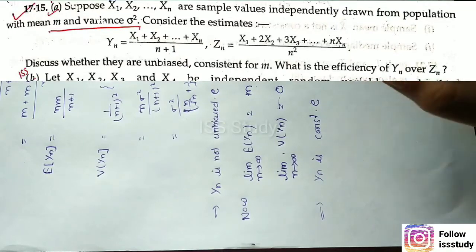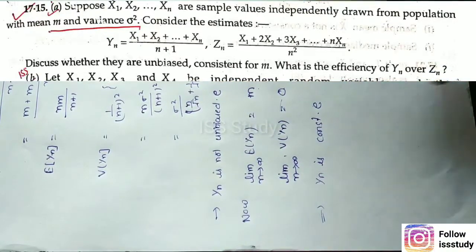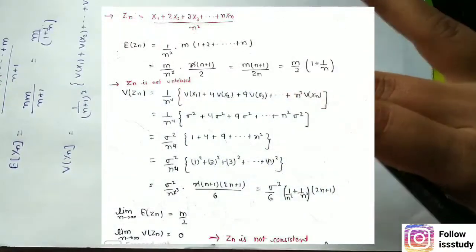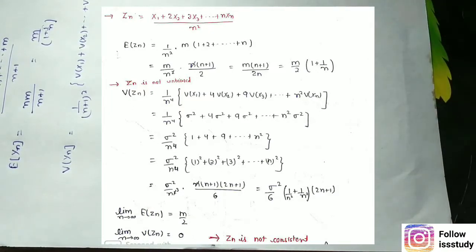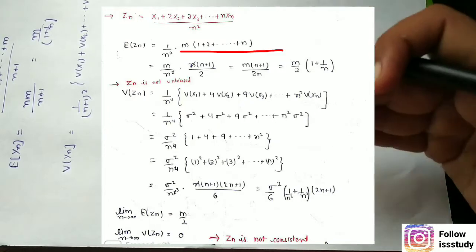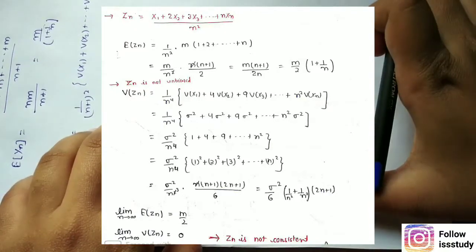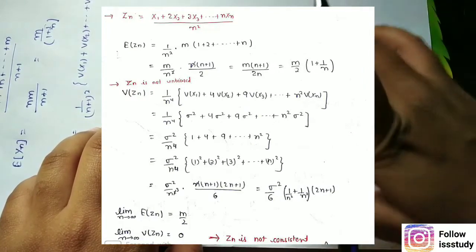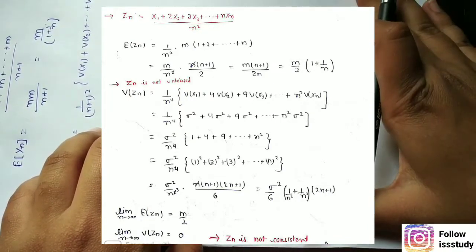You can solve the second part similarly. I have solved it in the photo — if you look at it you will understand easily. I applied expectation of x1, x2, ..., xn, each giving m. Then I used the formula for sum 1 to n, which is n(n+1)/2, substituted it, and n cancelled out, giving me the expectation value for zn.